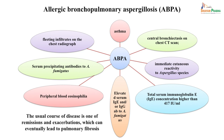Allergic bronchopulmonary aspergillosis (ABPA) is mainly asthma-associated. Chest CT may show bronchiectasis, skin sensitivity testing against Aspergillus is positive, serum IgE is elevated, and eosinophilia is present. Antibodies against Aspergillus fumigatus are seen in blood, and chest X-ray shows fleeting infiltrates. Elevated IgE and IgG against A. fumigatus are characteristic of ABPA.